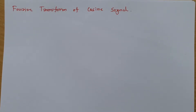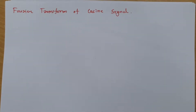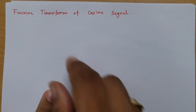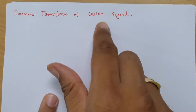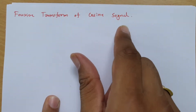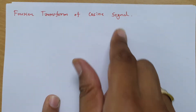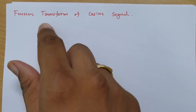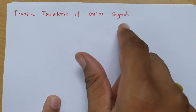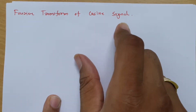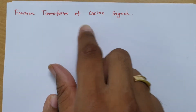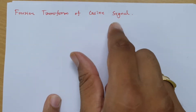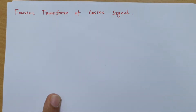Welcome to the Signal and System lecture series. Here in this session, I will be going to explain the Fourier transform of a cosine signal. So let me first define the cosine signal, and then we will calculate its Fourier transform.